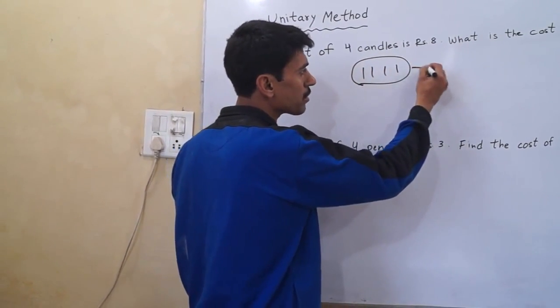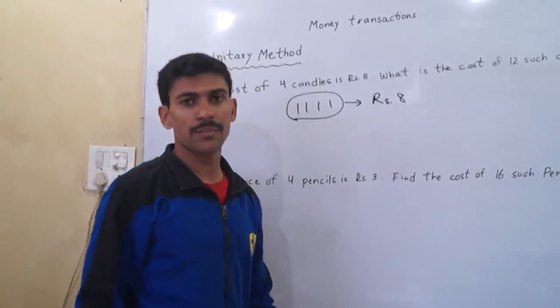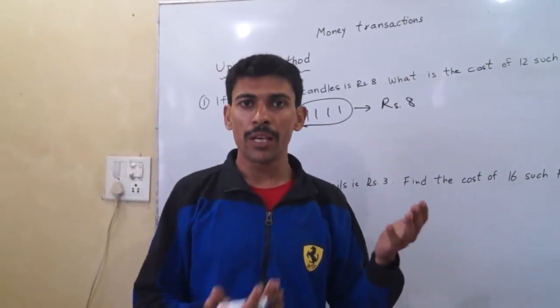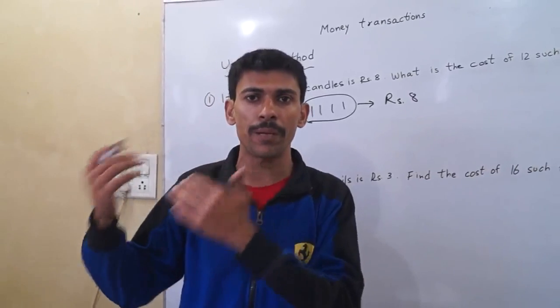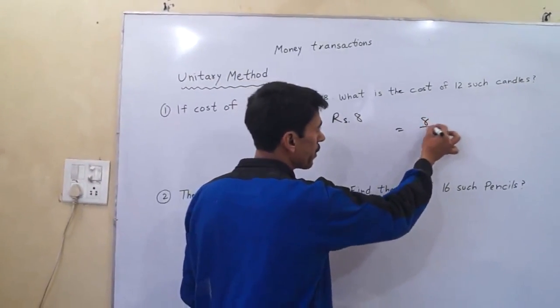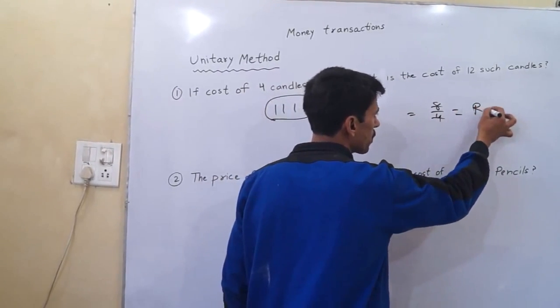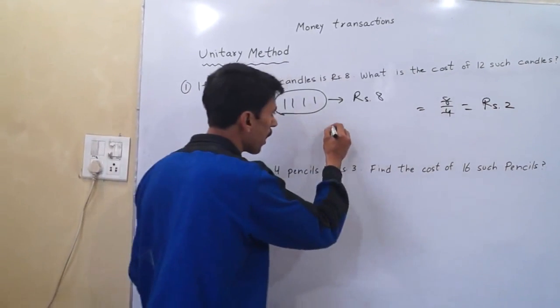Its cost is rupees 8. Now, very simple question: if we have four candles we have to pay 8 rupees, then we just divide 8 divided by 4. It means one candle's cost is rupees 2.